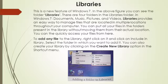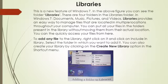Let us start with Libraries now. This is a new feature of Windows 7. In the given figure, you can see the folder Libraries. There are four folders in the Libraries folder in Windows 7: Documents, Music, Pictures and Videos. Libraries provides an easy way to manage files that are located in multiple locations throughout your computer. You can put all your files in the folders present in the library, and without moving them from their actual location, you can quickly access your files from here.